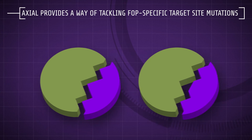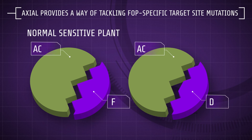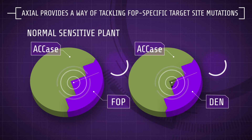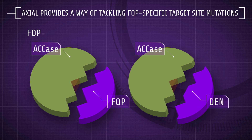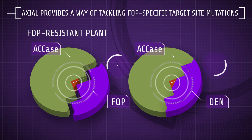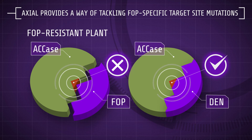In the case of ACCase herbicide resistance, mutations in the herbicide binding site of ACCase mean the herbicide can no longer bind and inhibit its activity. Different mutations can affect different products, or the whole group, depending on the shape of the chemical molecule and its ability to bind onto the target. Panoxidin is a different shape to, for instance, Panoxiprop, and can therefore still bind onto the target when certain mutations, which affect FOP only, are present.